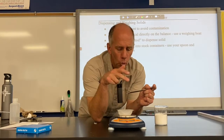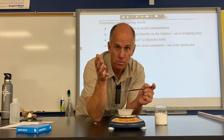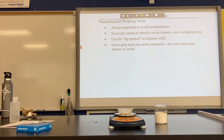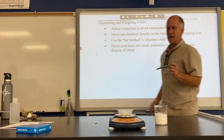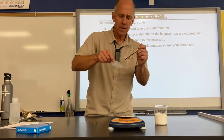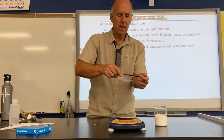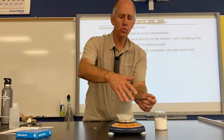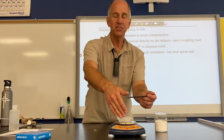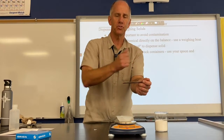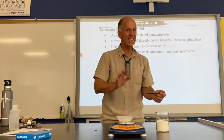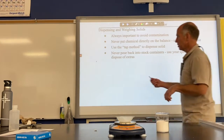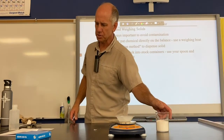What if you get too much on the weighing boat? Go over to the trash and get rid of the extra, then come back and use the spoon to take some out until it weighs less than a gram, then tap back up to exactly a gram. The extra from the spoon goes in the trash. Again, we don't pour back into a stock container in any case.